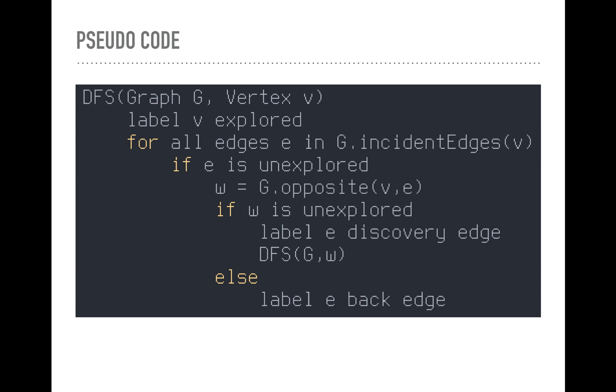Let's look at the pseudocode. The depth first search function accepts a graph G and a vertex V. The first thing we're going to do is label our start vertex V as explored because we're there. We visited it. Now, for all edges E in G.incidentEdges(V), so in the graph G, all incident edges of V, which are all the edges that have V as an endpoint, so for every edge attached to our starting vertex, if E is unexplored, we haven't explored that edge yet.